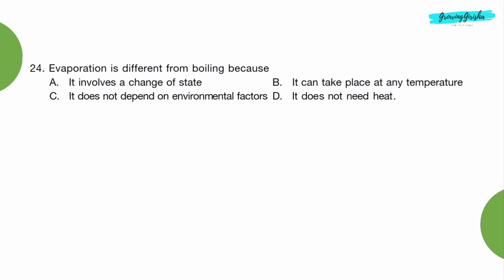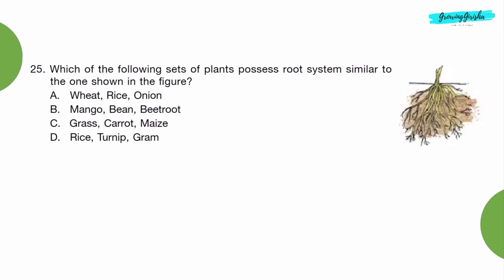Question 24: Evaporation is different from boiling because... Option B: It can take place at any temperature. Question 25: Which of the following sets of plants possesses root system similar to the one shown in the figure? Option A: Wheat, rice and onion.